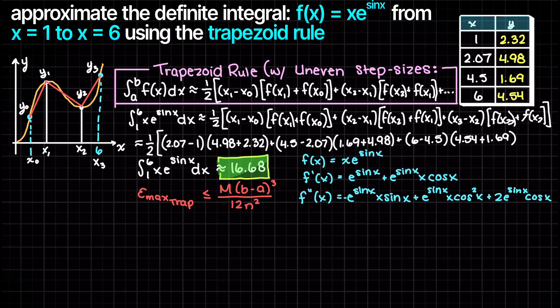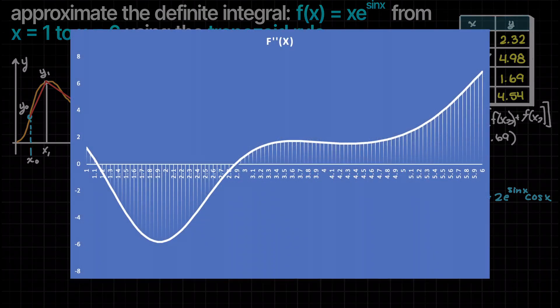I'm going to graph this second derivative in Excel to see roughly where it reaches a maximum absolute value within our 1-6 bounds. The result of this is that at 6 we have a second derivative that reaches 6.903.